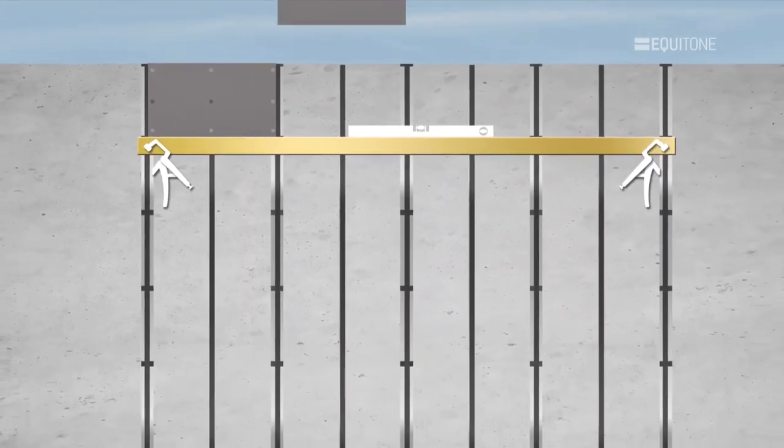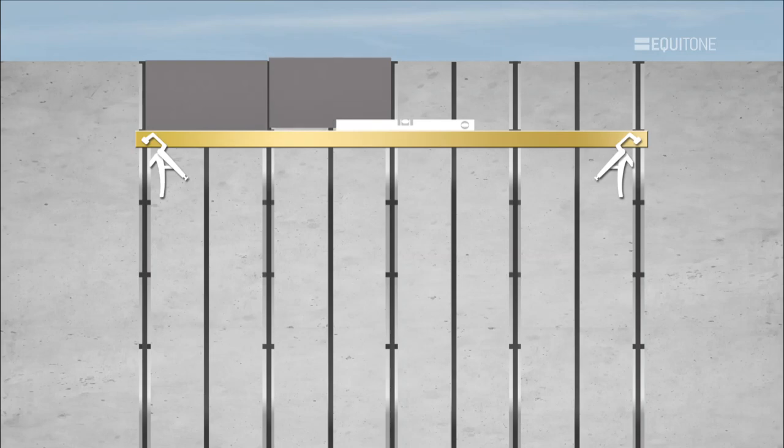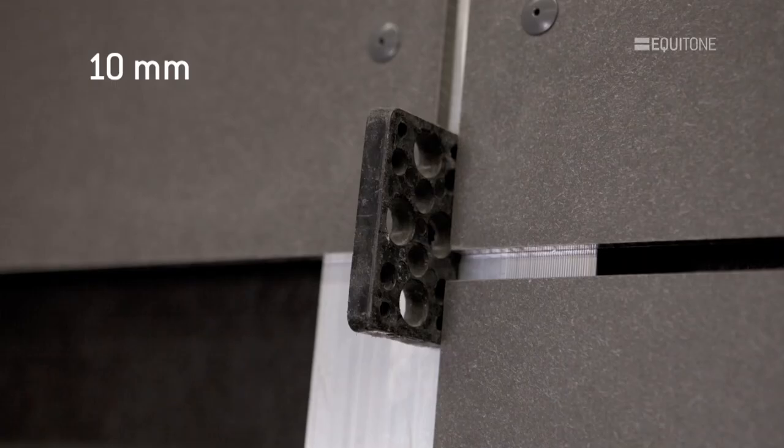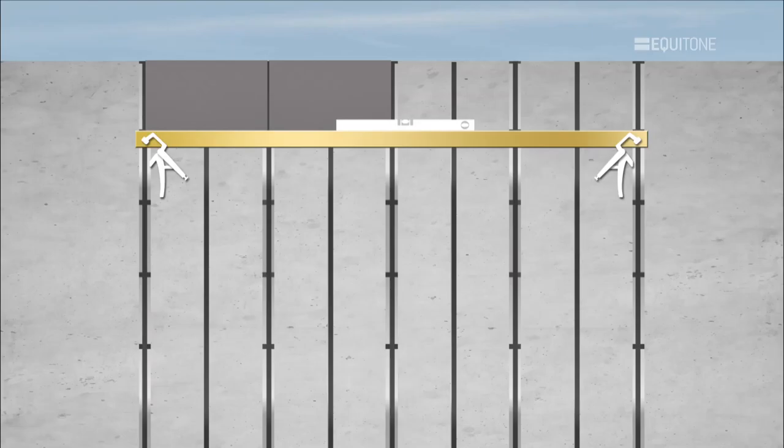Lift and slide the next Equitone panel into place. Use spacers of a type not to cause damage to the joint. Fix this panel as the first panel.